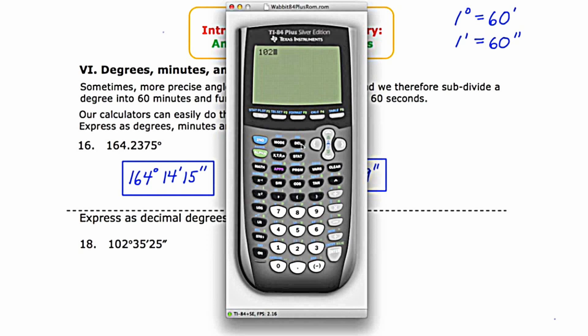Queue up that angle menu by pressing second, apps. I'm going to need the degree symbol, which is option one. I'm going to type 35 and then grab the minute symbol, which is also in the angles menu. It's option two.